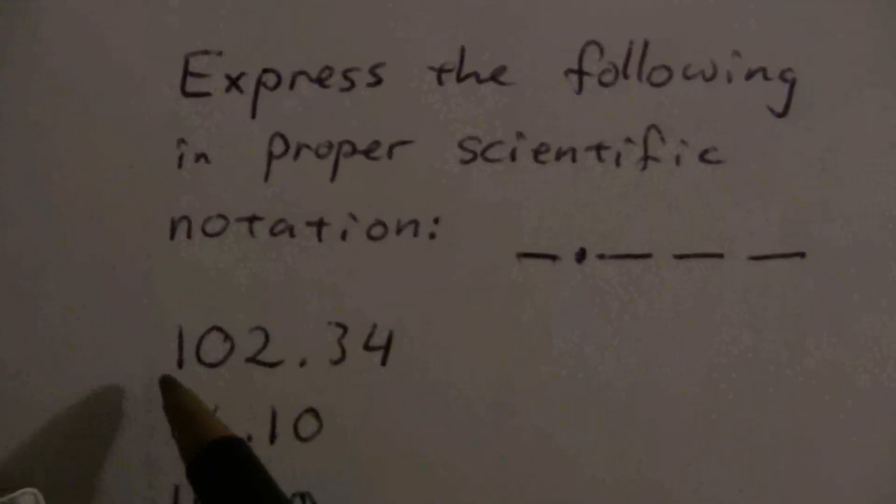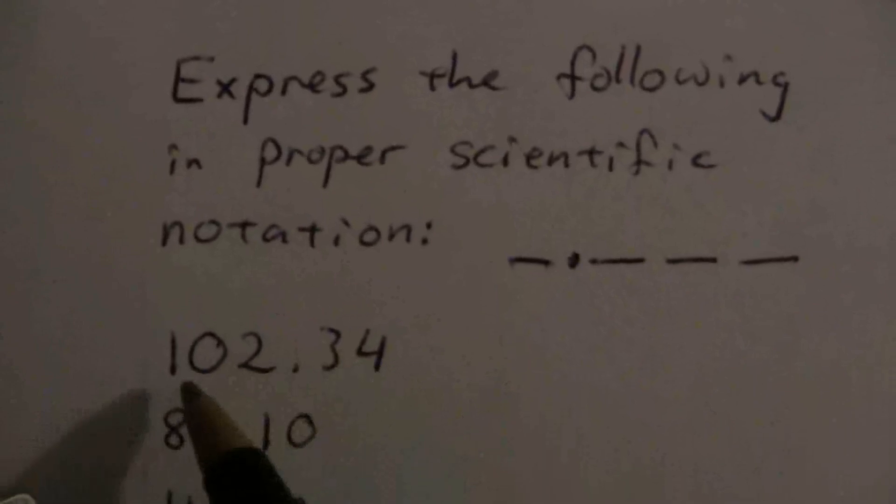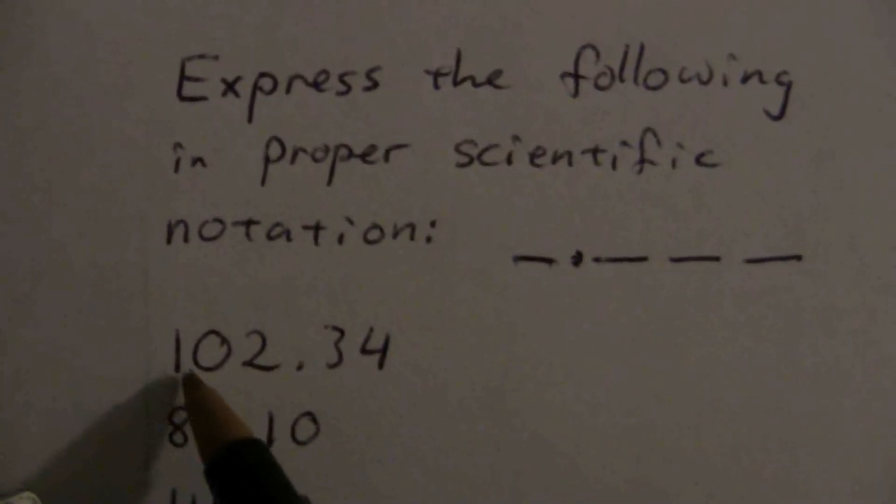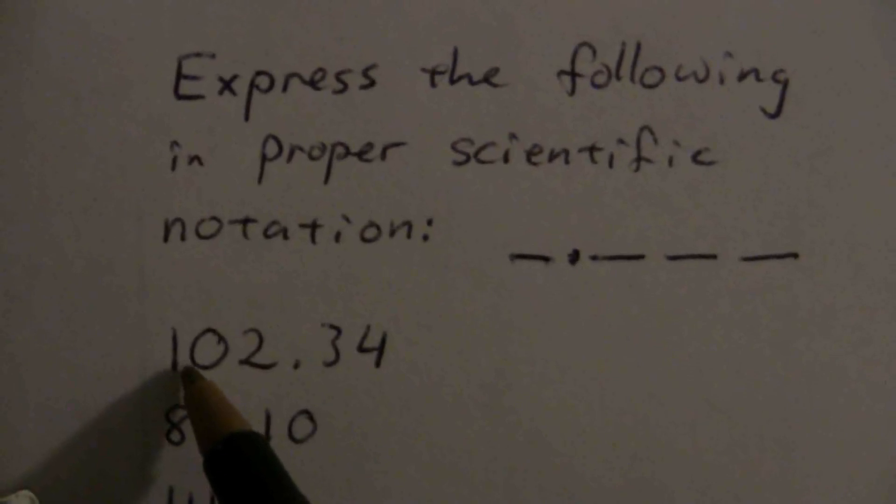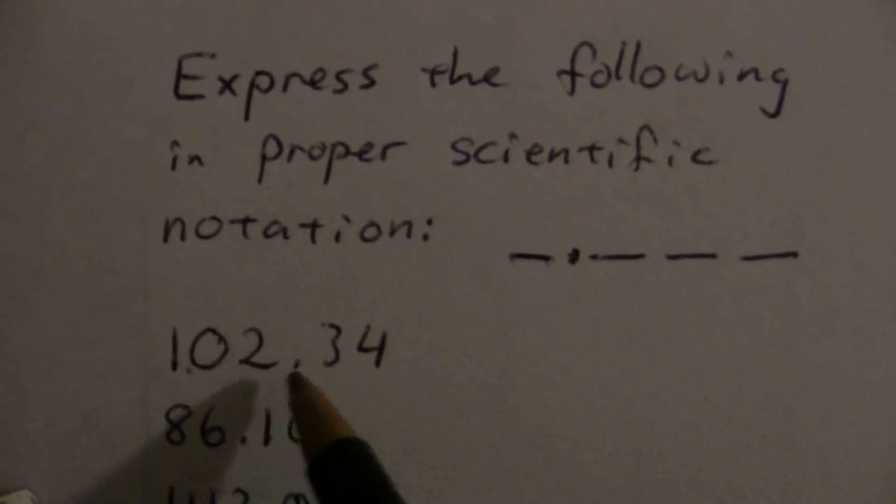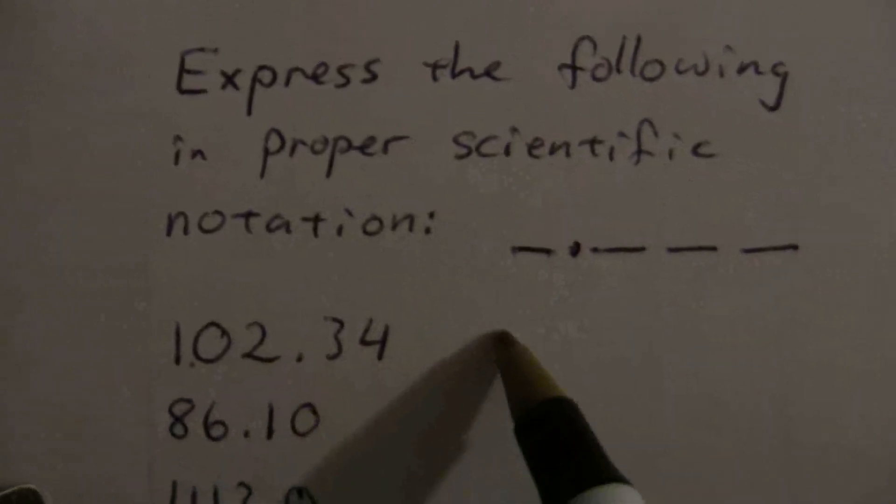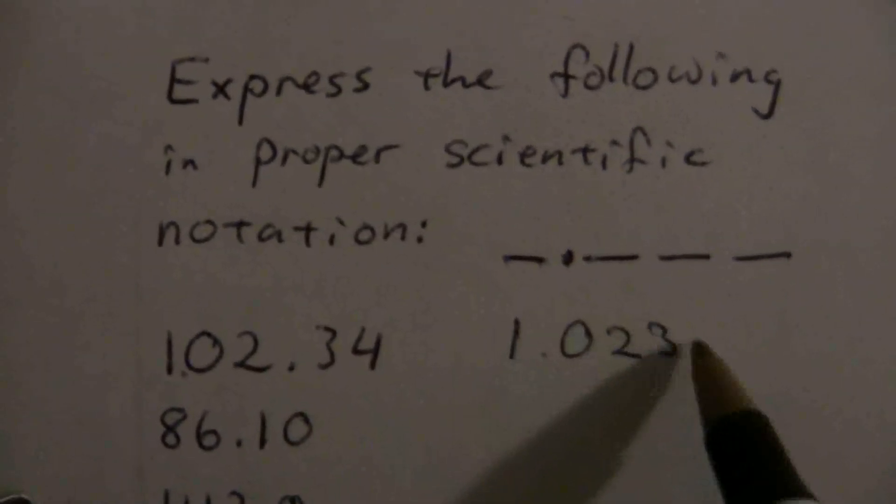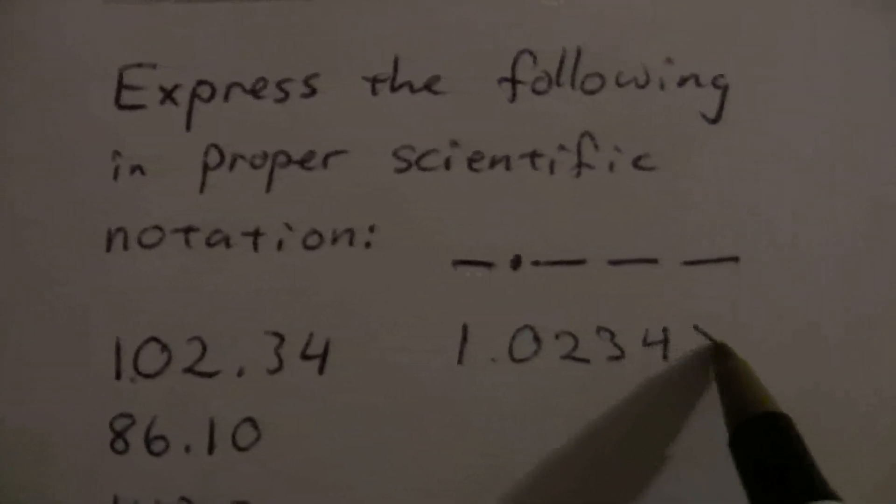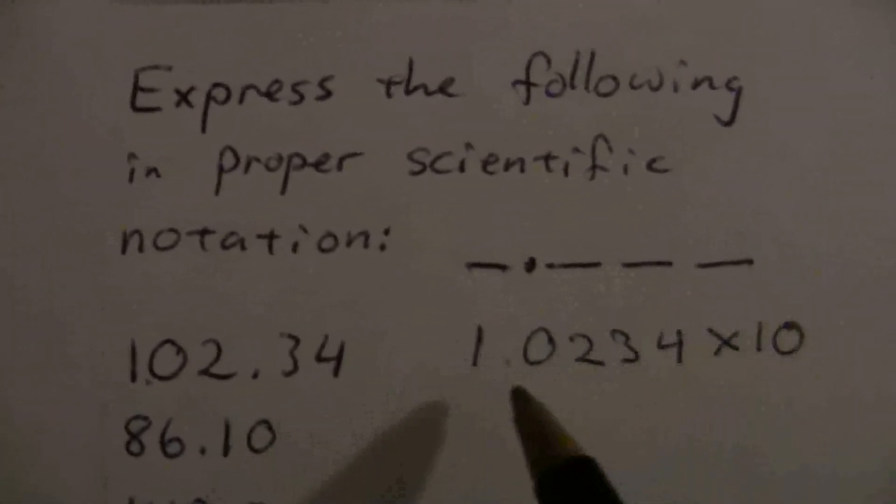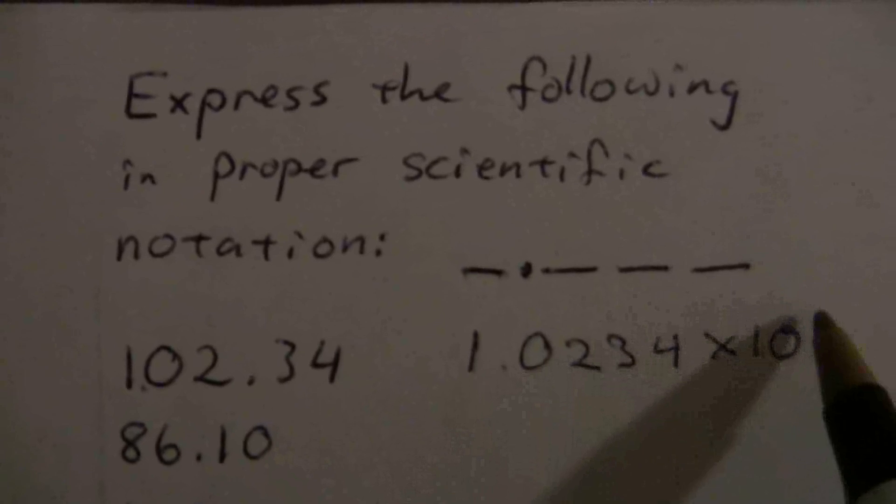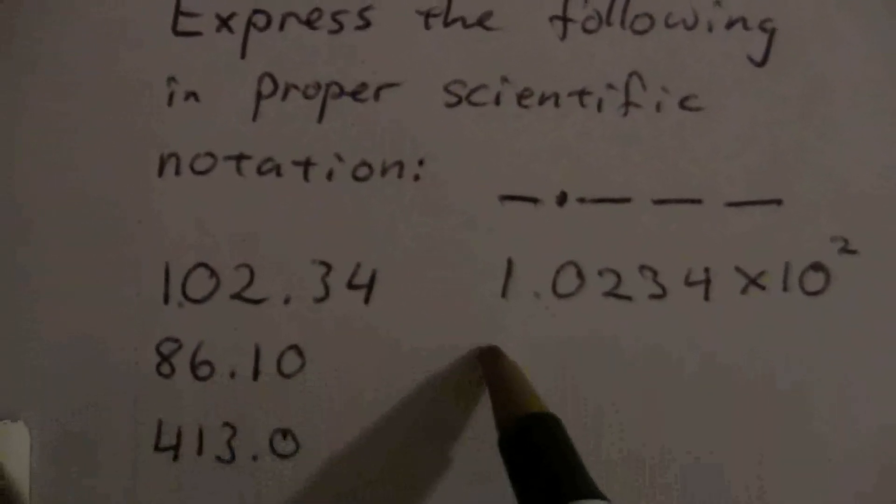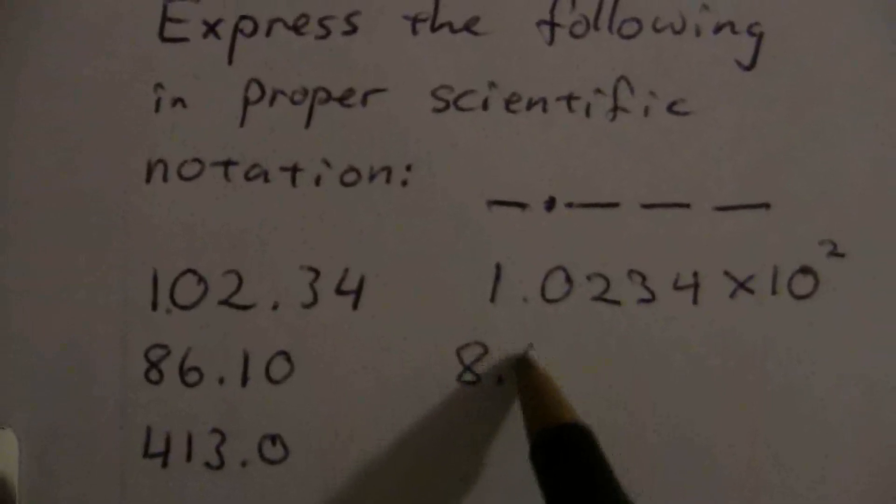Here we have 102.34, so that means we want the decimal to go between the one and the zero. That means we have to move it one, two places. So that's going to be 1.0234 times ten to the two.